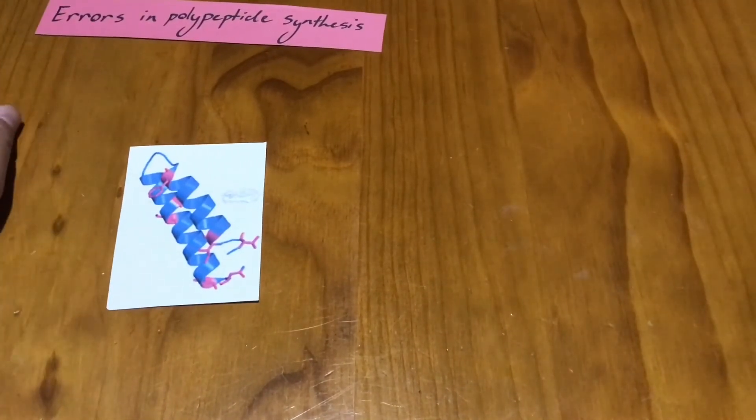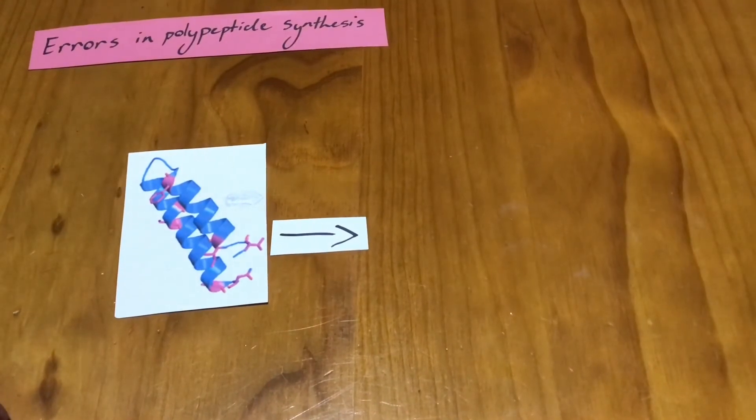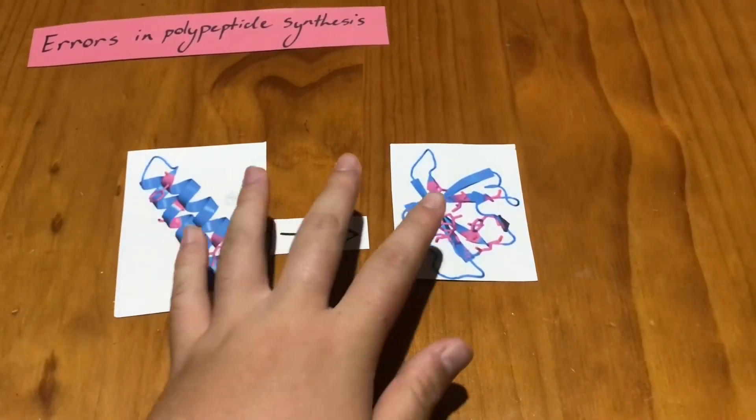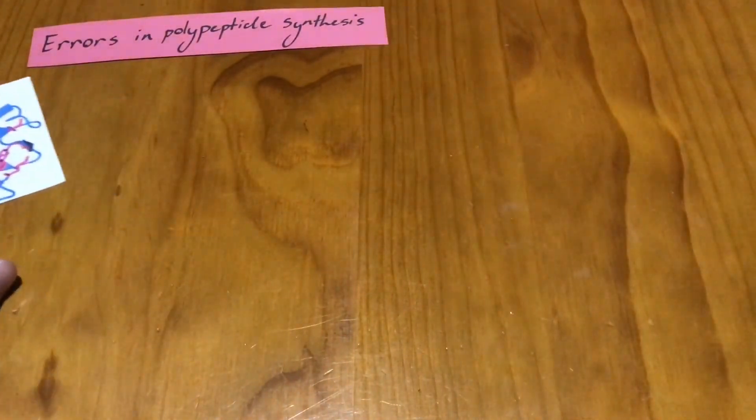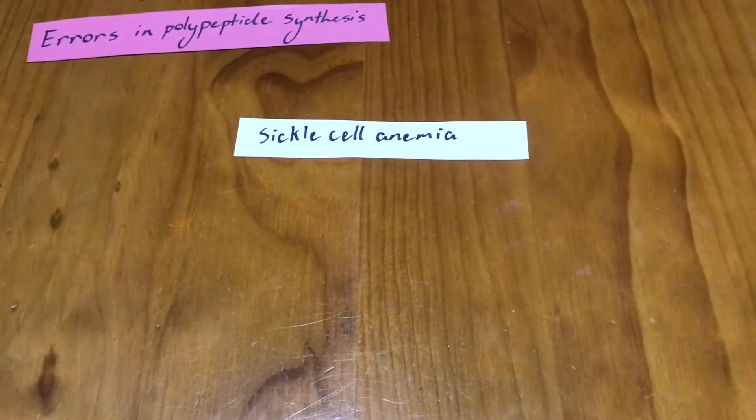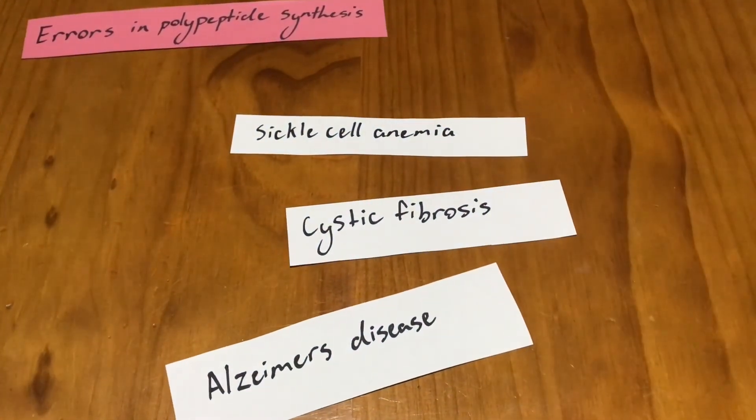This can lead to cell death, tissue damage, or nasty genetic diseases. Some genetic diseases caused by errors of protein synthesis are sickle cell anemia, cystic fibrosis, and speculated by scientists, Alzheimer's disease.